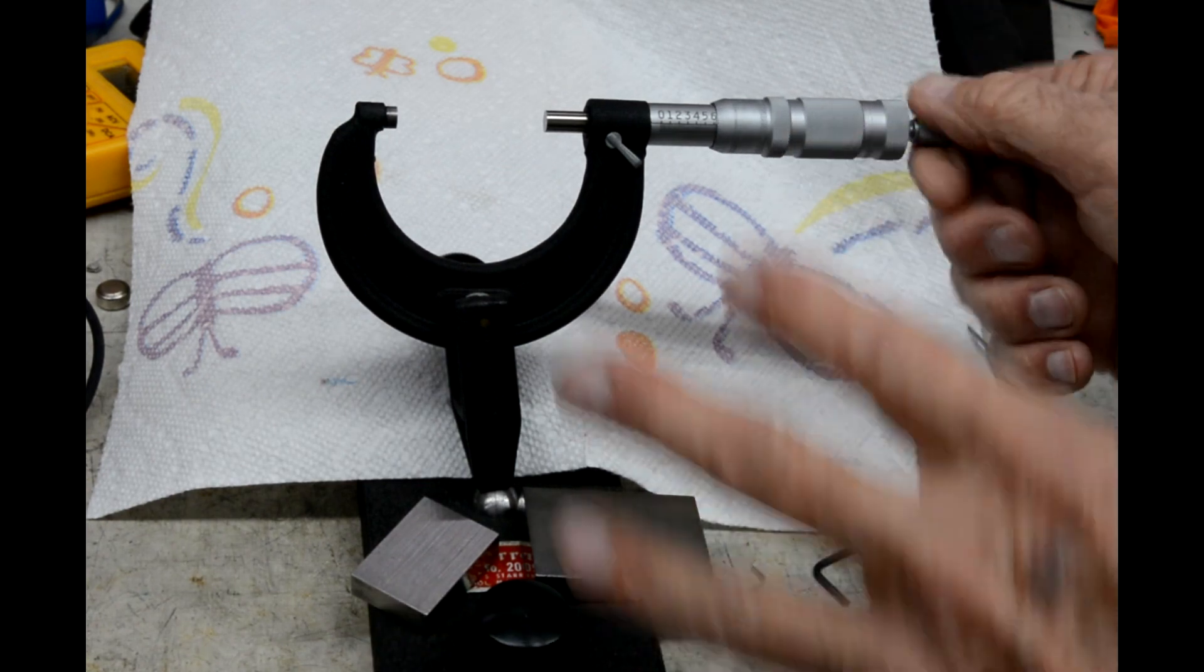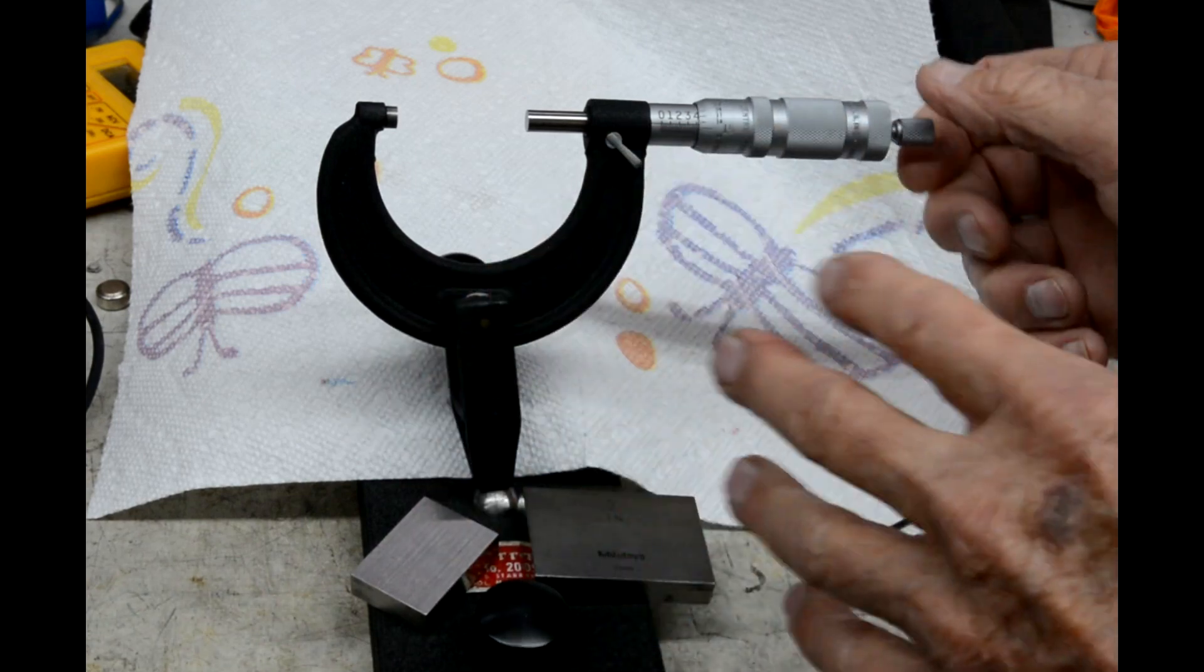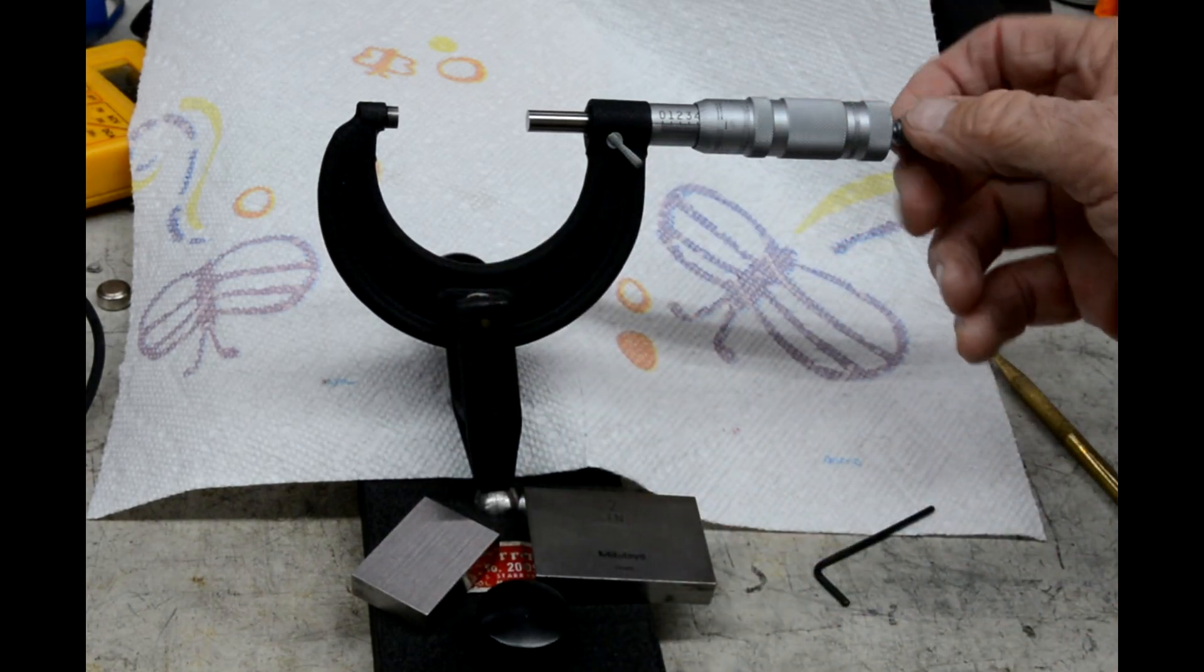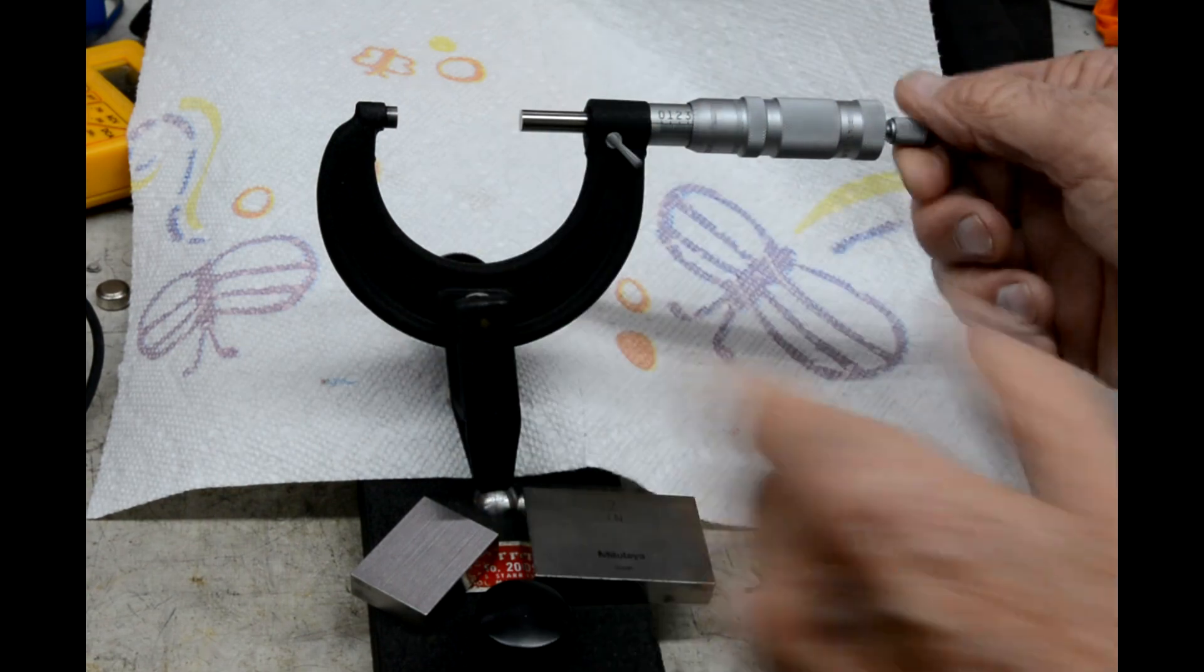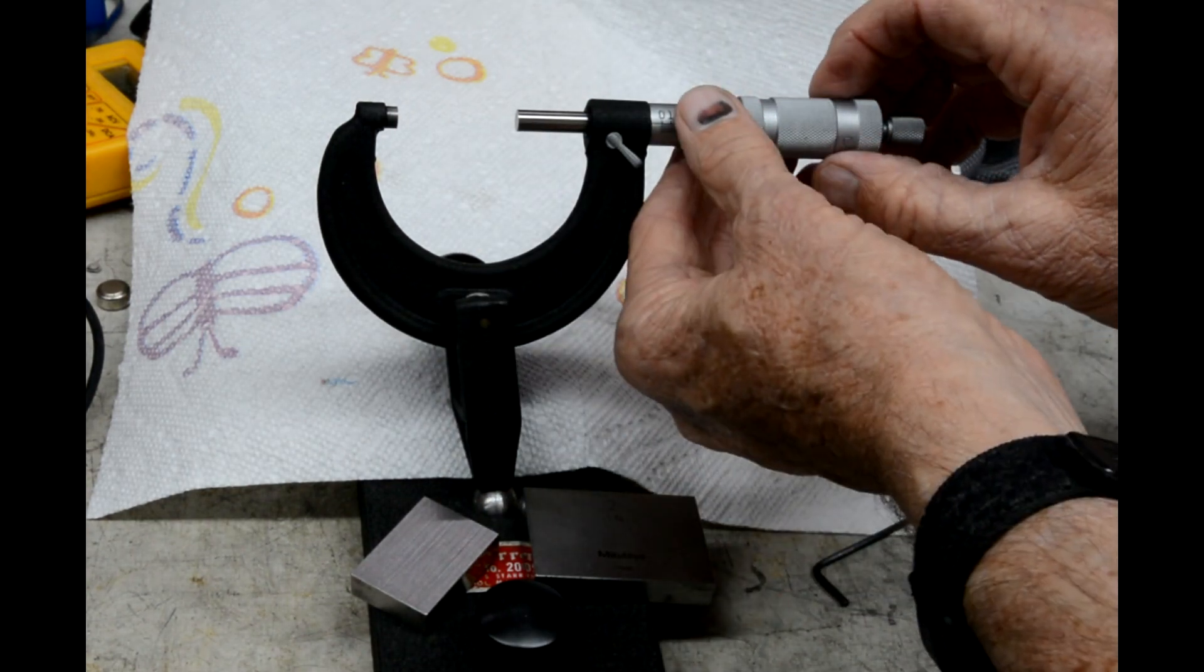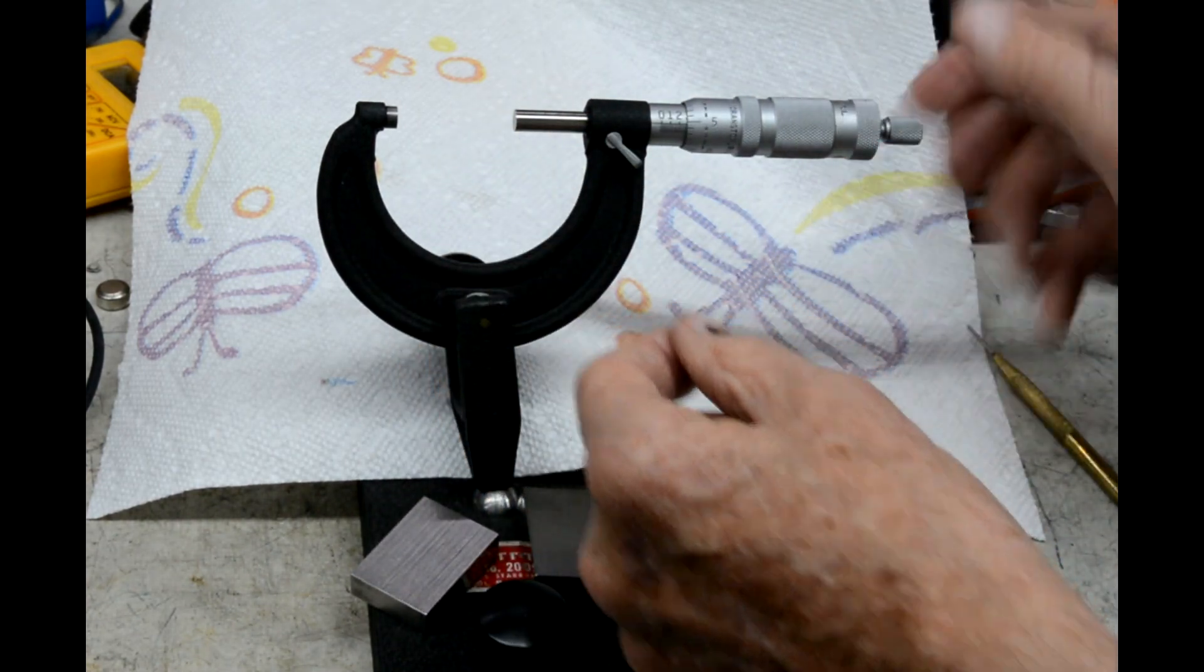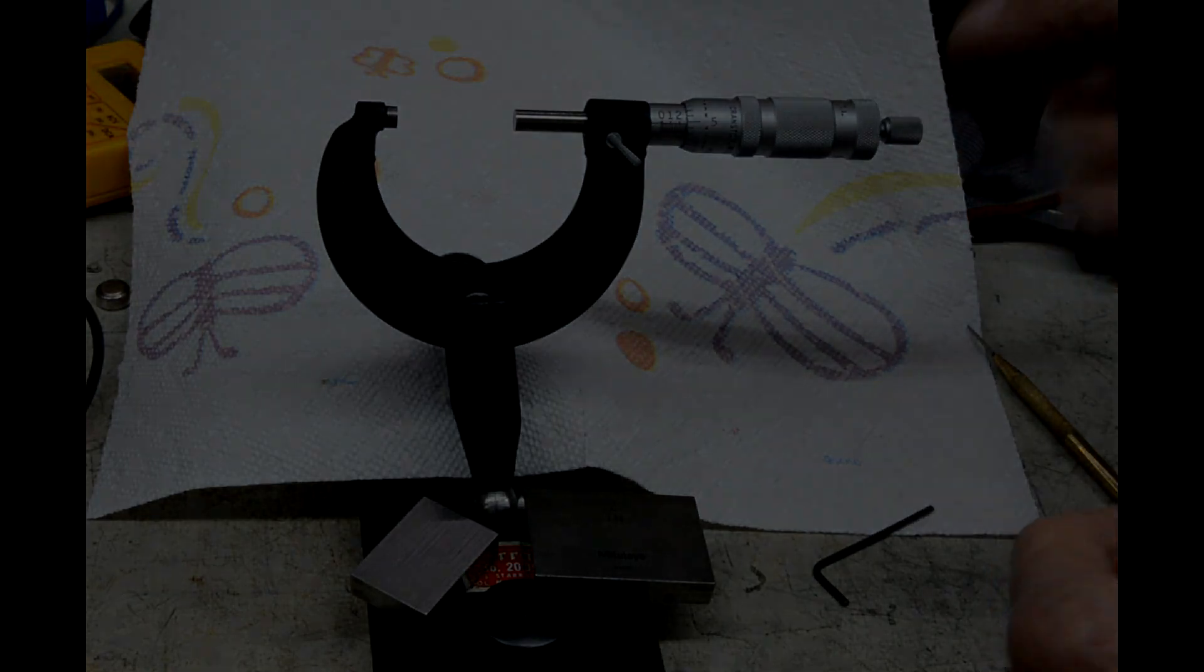But once you get it adjusted, you know you're good. Now I would check this every six or seven times you pull this out to use it. Because if you were to twist this too hard or bite down on this, you could turn this and have it spin on that shaft.